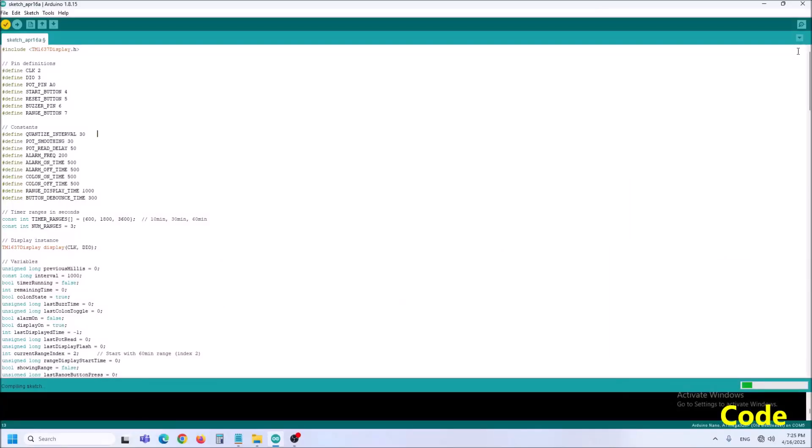As for the code, I tried to make it as flexible and easy to modify as possible, so with minimal changes we can create a custom timer to suit our own requirements. In short, as you can see, all the timer parameters can be changed. For example, the previously mentioned quantize interval, potentiometer smoothing, potentiometer read delay, buzzer frequencies as well as on and off time, number and duration of time ranges, and even the brightness of the display.